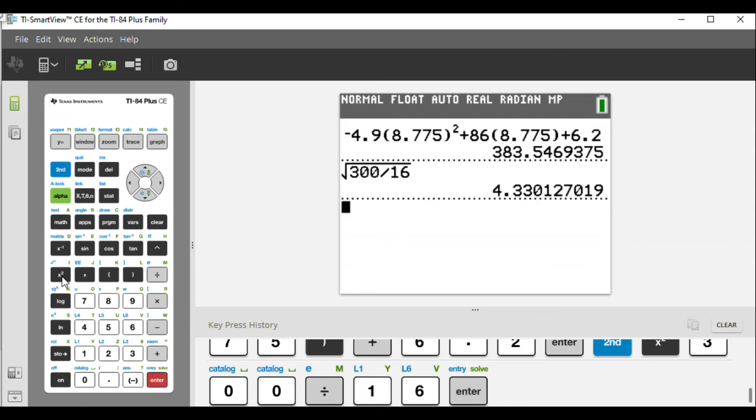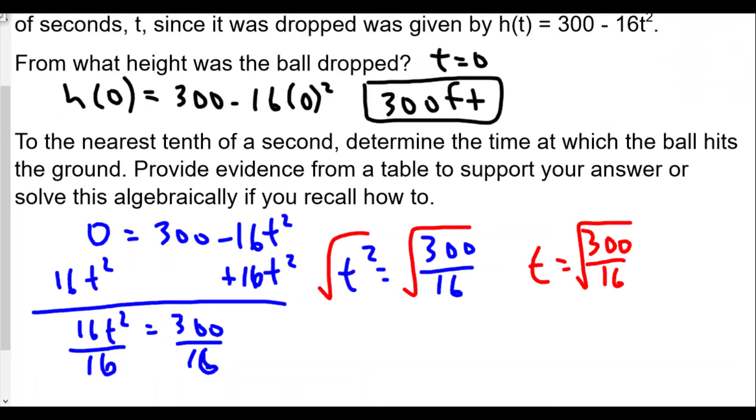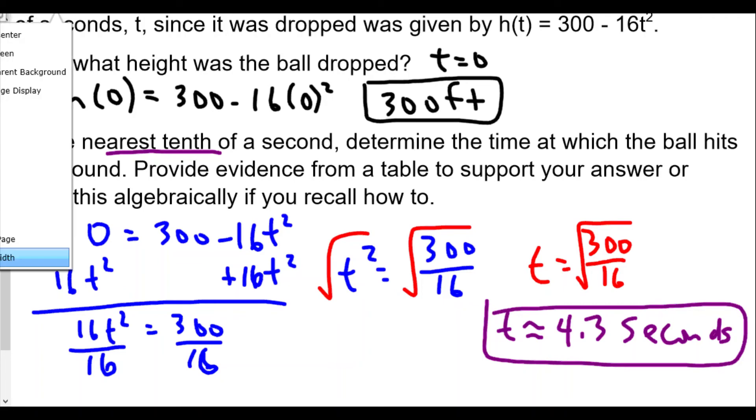They ask to approximate this to the nearest tenth of a second. So we see here the calculator will do this for me: 4.330. So it looks like to the nearest tenth of a second would be 4.3 seconds. So the nearest tenth of a second, t is approximately 4.3 seconds. Make sure you include the units too, because numbers by themselves don't really mean anything without context.